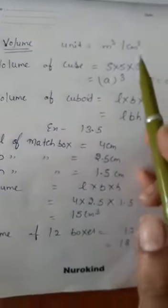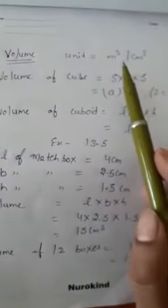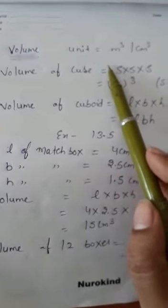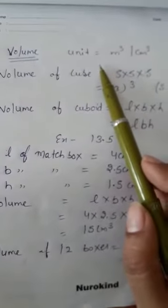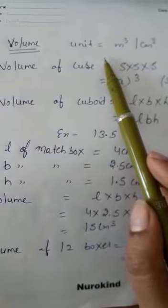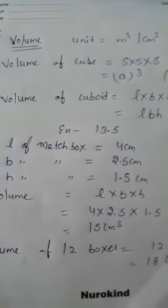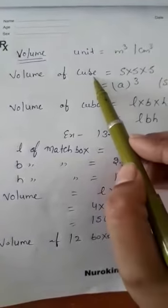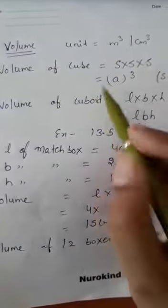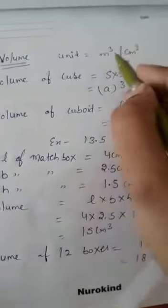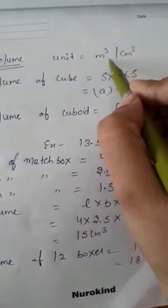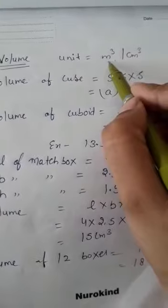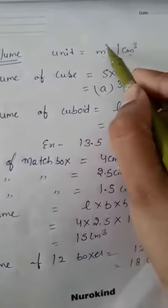Good evening students. As we have done surface area, now we will read about volume. Volume is the amount of material contained in a shape. Firstly we will learn about the volume of cube and volume of cuboid. As you have done, the unit of surface area is meter square; in the same way, the unit of volume is cubic meter or cubic centimeter.